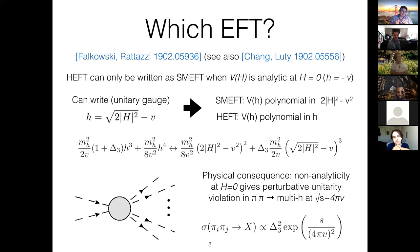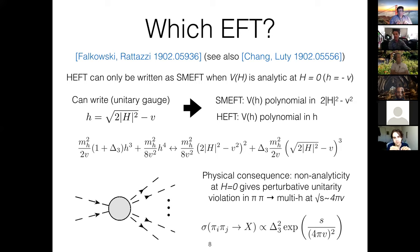There was an interesting paper that came out last year by Riccardo Rattazzi and Adam Falkowski trying to answer in a robust way when you had a theory that must be written as HEFT and could not be written as SMEFT. The claim was that an EFT can only be written as SMEFT when, if you take the theory and parametrize it in terms of the SU(2) doublet H, the potential in terms of those variables is analytic at the origin of that doublet field.